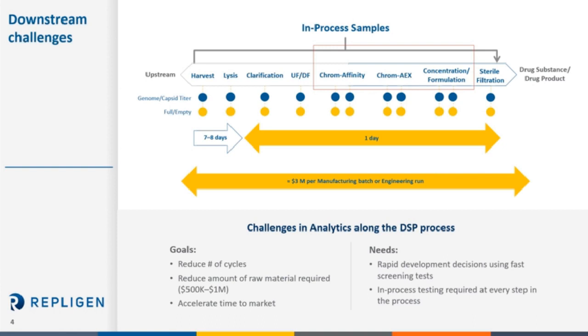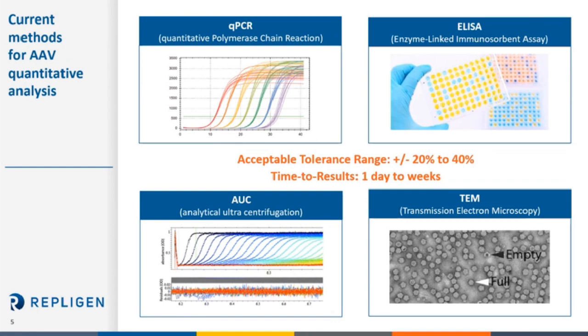Here are the most currently used methods for AAV quantitative analysis: QPCR and ELISA, DDPCR and ELISA, AUC, and TEM. Unfortunately, most acceptable tolerance ranges with these current techniques are anywhere between plus or minus 20 to 40 percent. Additionally, the timed results are quite substantial, ranging from one day to potentially two weeks, and that doesn't include the cost of analysis. Our goal using slope spectroscopy is not to replace any of these techniques, but to implement an analytical technique when a very quick comparable result is required at any stage of the purification process to give you confidence of the titer and allow for continued processing.